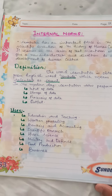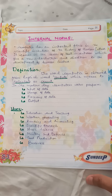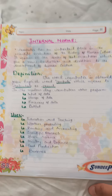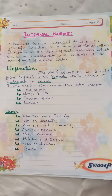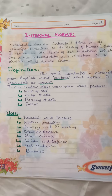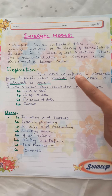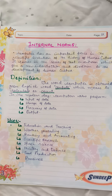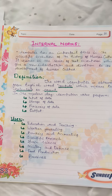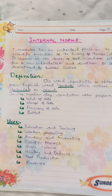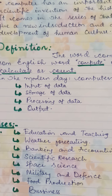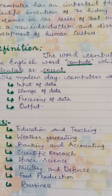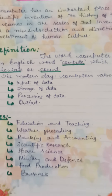Now we begin with the internal norms. We are going to start with the definition of what a computer is, how this word was coined, then the history, some evolution, and why we use computer systems. The word has been obtained from 'compute', which mainly means calculate or count. In the olden days it was mainly used for calculation, but with development and modernization it now performs input of data, storage of data, processing of data, and output — these are the instructions we can give to a computer system.